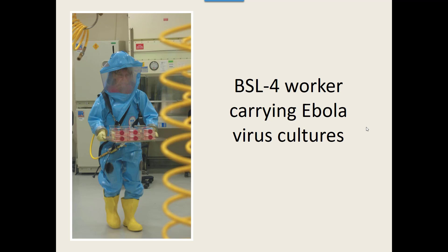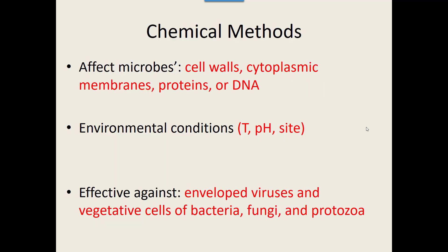My second group: there are physical methods and chemical methods to kill microorganisms. Chemicals affect microbial cell walls, membranes, proteins, and DNA — the same basic targets as physical methods. We also have to know the environmental conditions because different chemicals work better at certain temperatures, pH levels, and on certain sites.